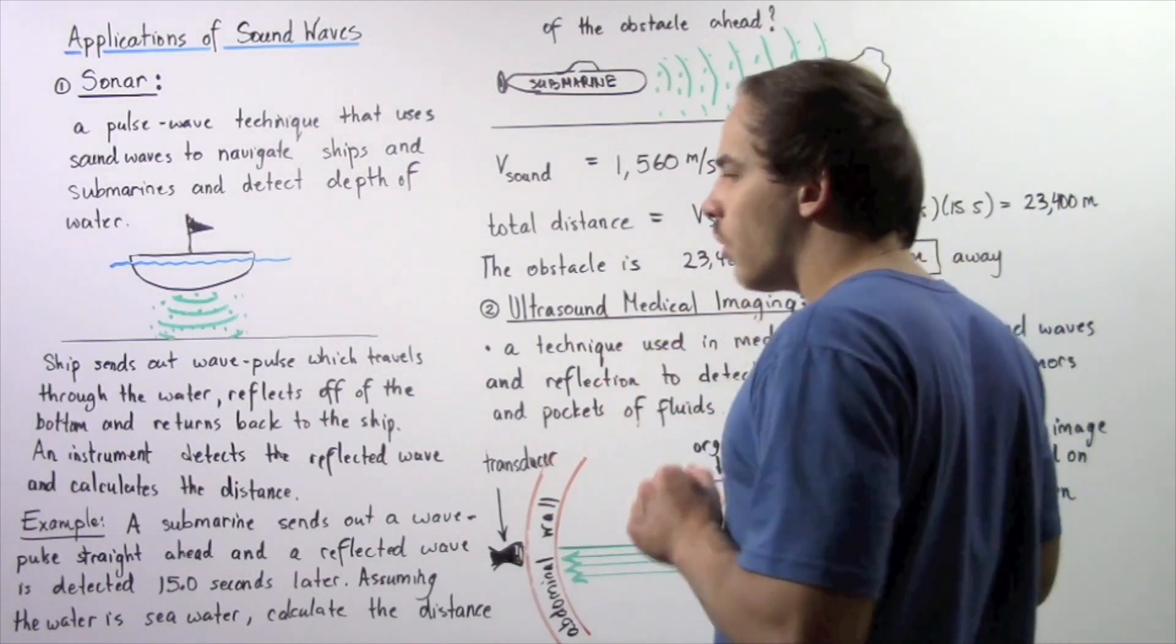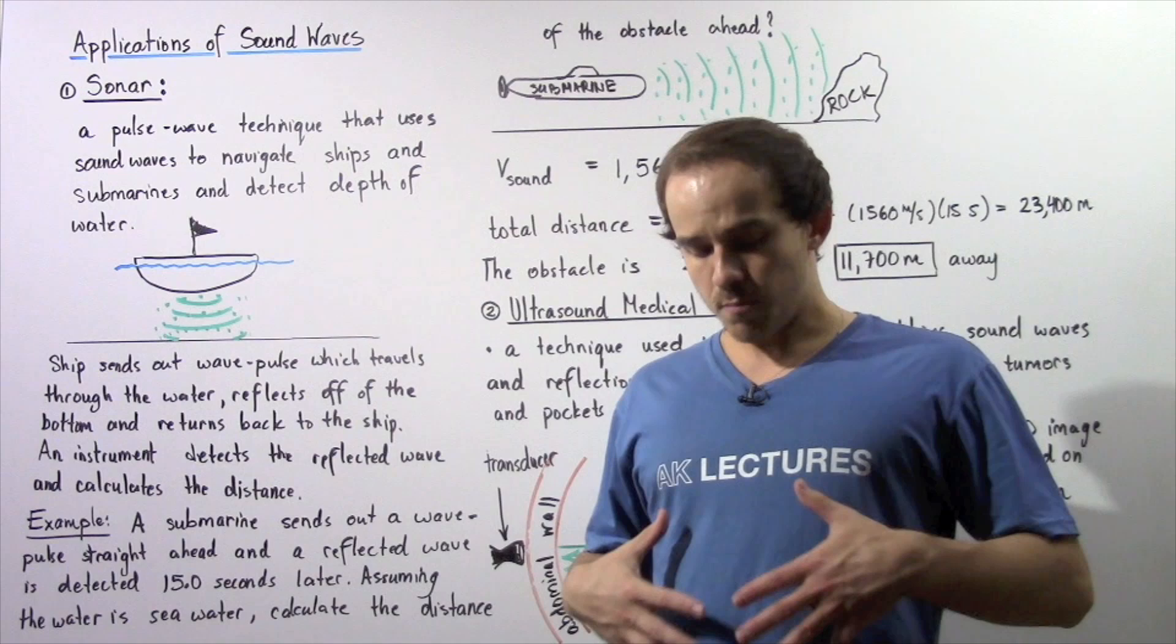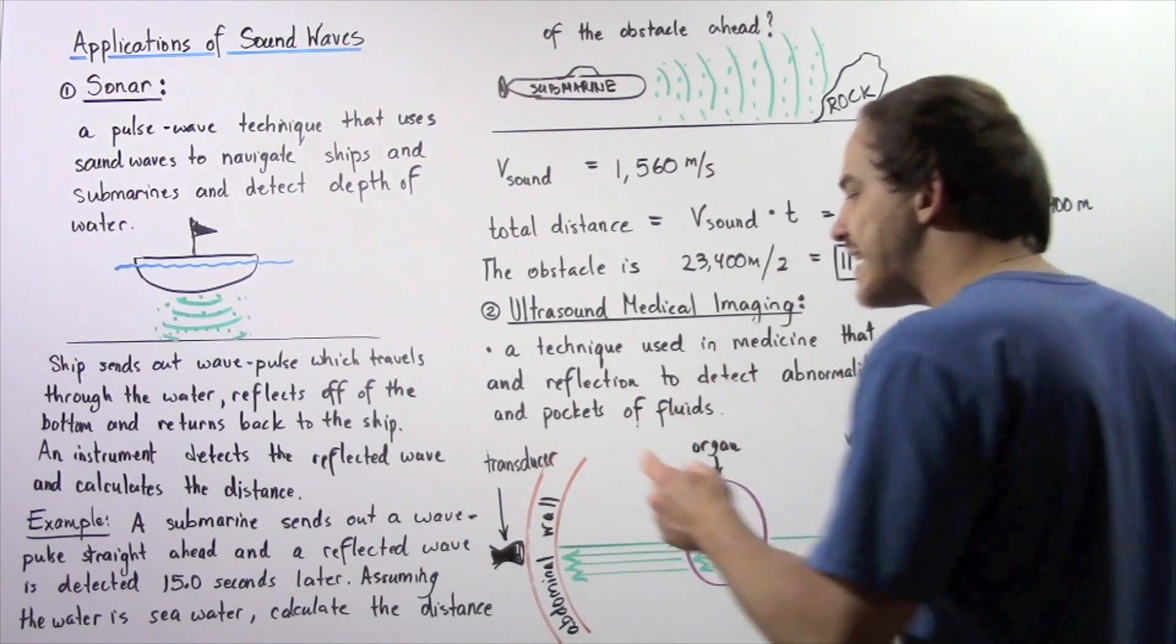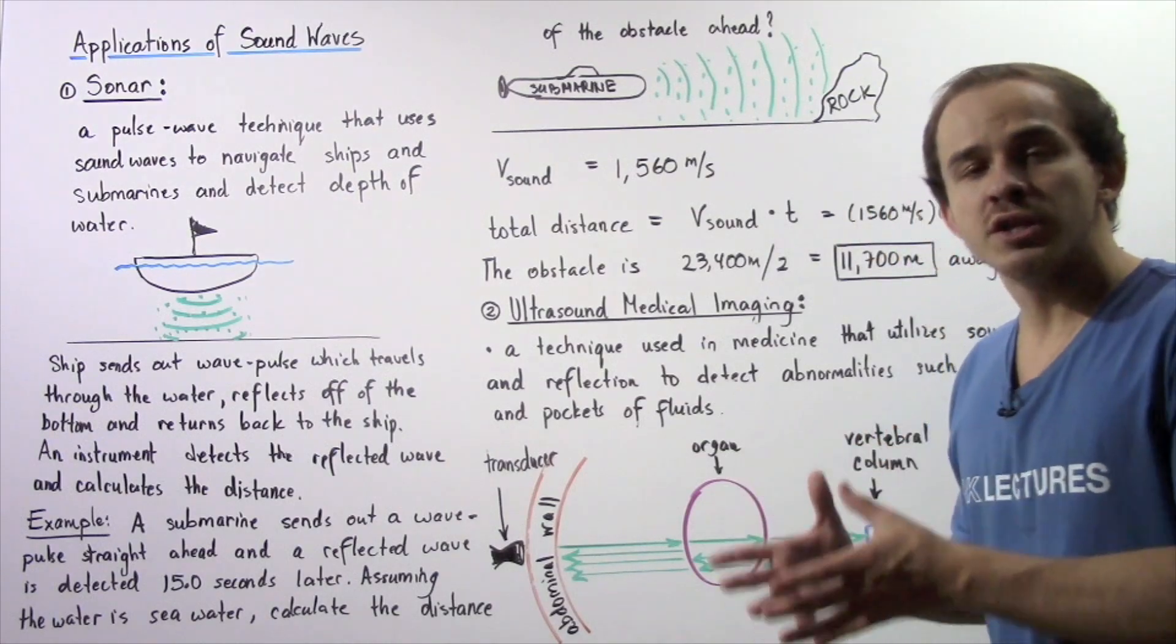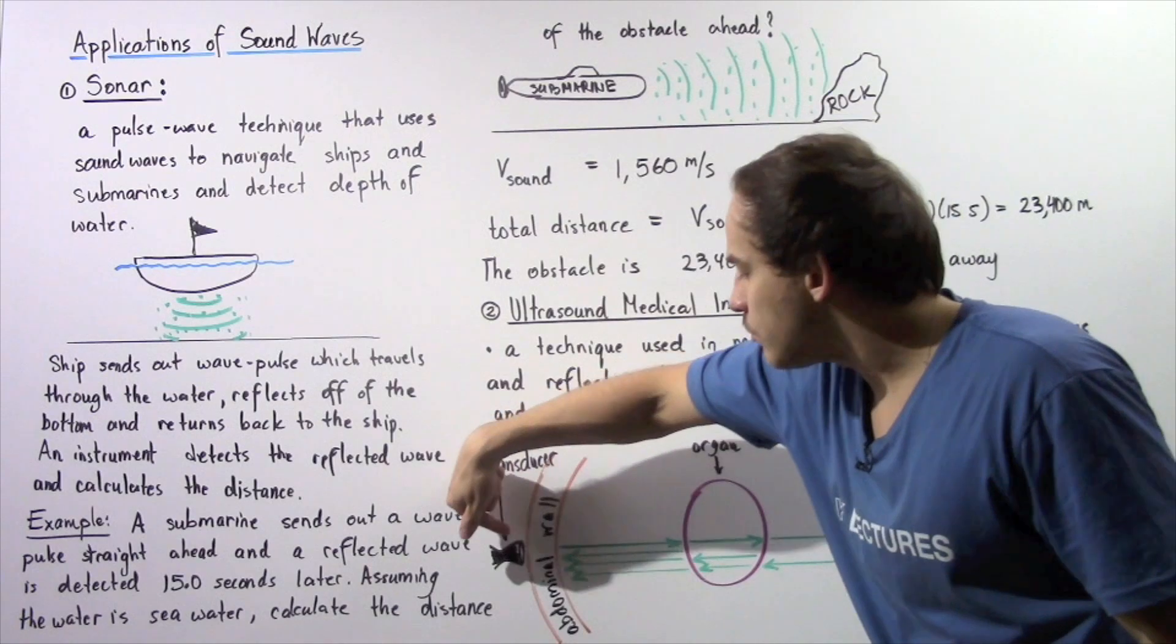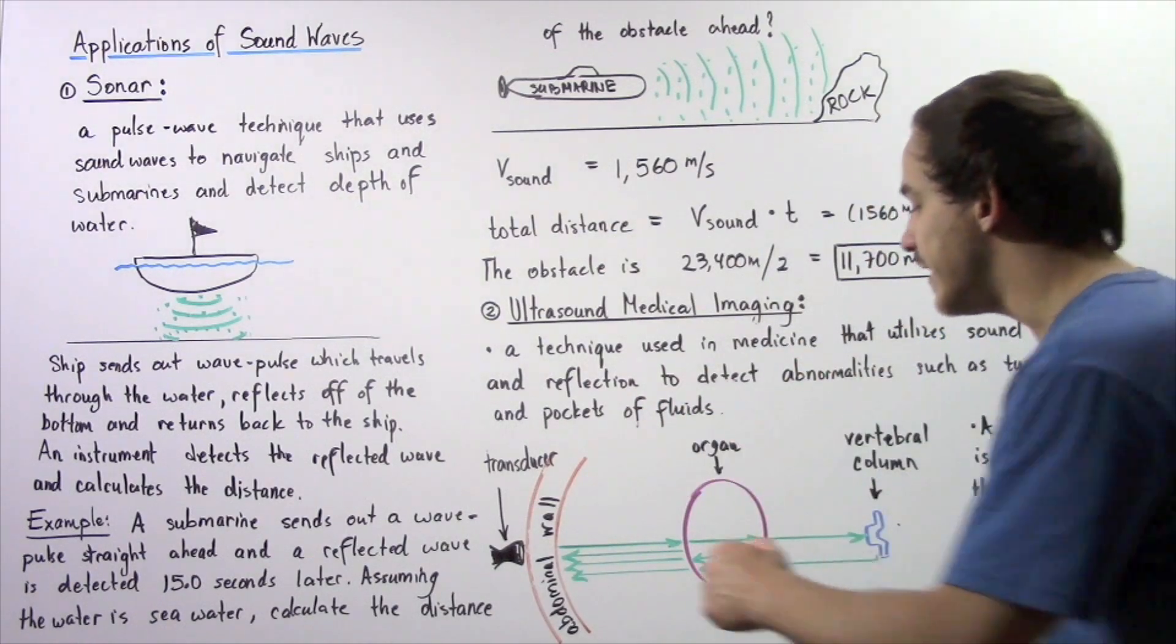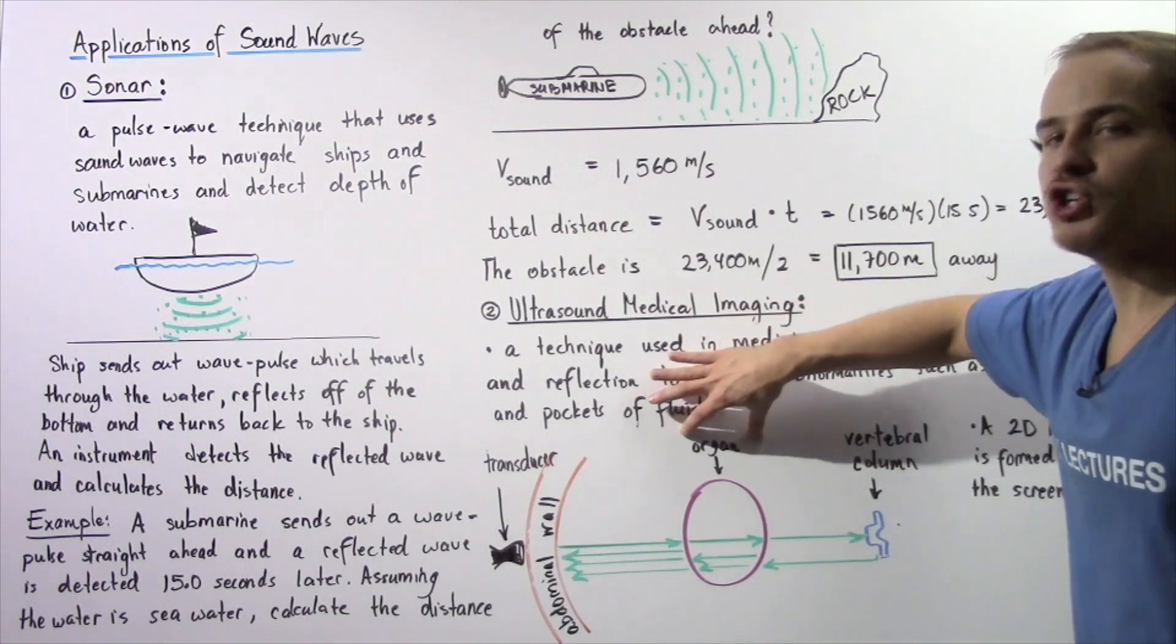Let's suppose we want to use ultrasound to study the organs found beneath the abdominal wall. Here we have our abdominal wall and we take an instrument called a transducer. The transducer creates an electrical pulse that is transformed into a sound wave that travels through the abdominal wall and into the fluid found inside our body. That sound wave continues traveling onward until it hits an organ.